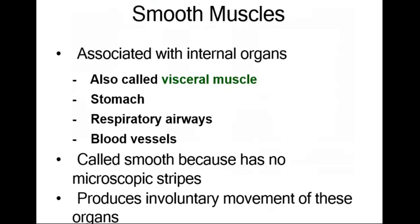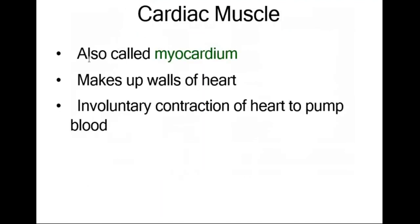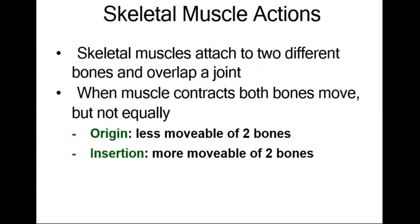Smooth muscle is called visceral muscle and has no microscopic strips, producing involuntary movement of internal organs. Cardiac muscle, also called the myocardium, makes up the walls of the heart and contracts involuntarily to pump blood. Skeletal muscle is attached to two different bones and overlaps a joint. When the muscle contracts, both bones move — the origin is the less mobile of the two bones, and the insertion is the more movable.